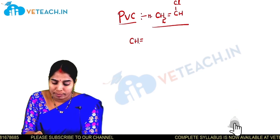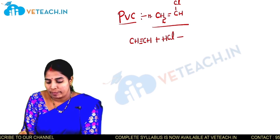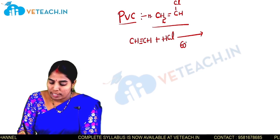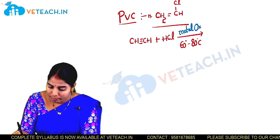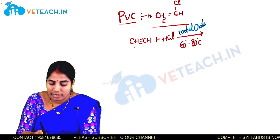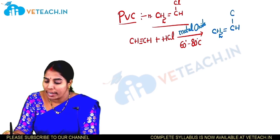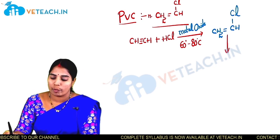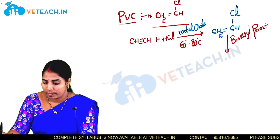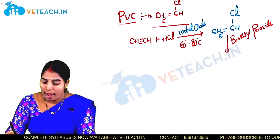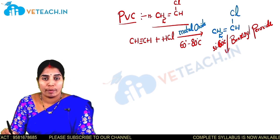The structure of acetylene is CH triple bond CH. When acetylene reacts with hydrogen chloride in the presence of metal oxide catalyst at 60 to 80 degrees centigrade, we get vinyl chloride. This vinyl chloride then undergoes polymerization in the presence of benzoyl peroxide or hydrogen peroxide at 32 to 60 degrees centigrade to give PVC.